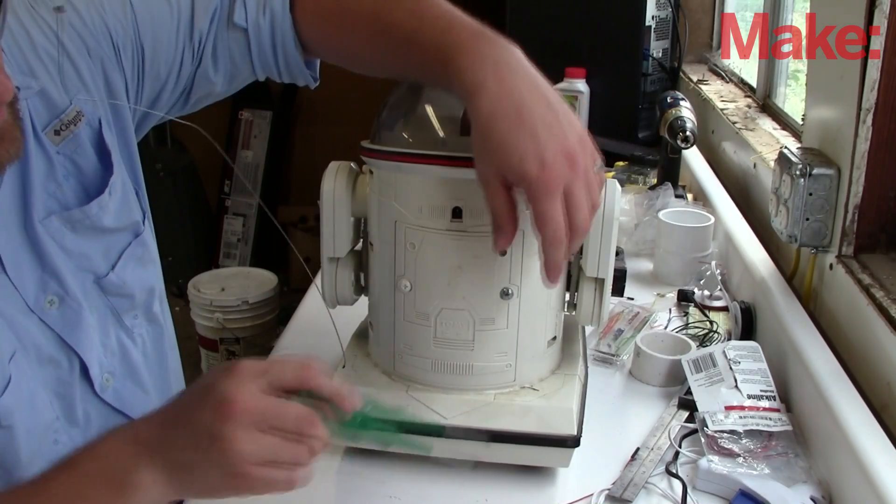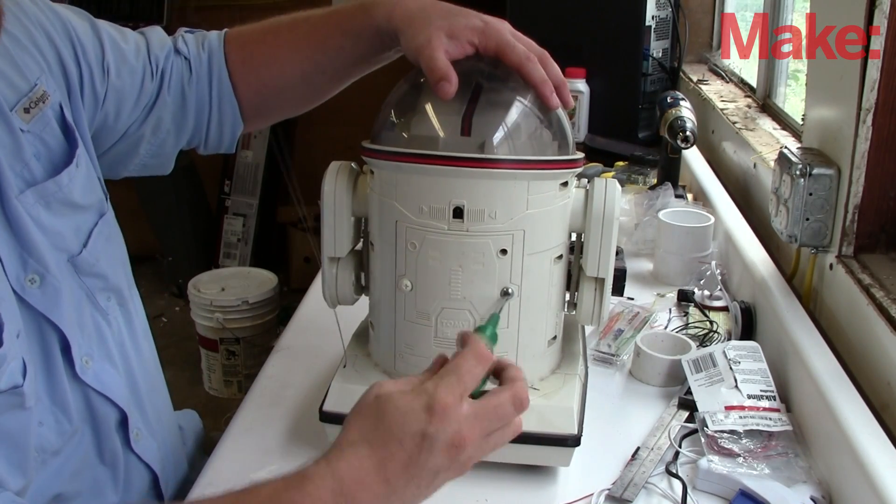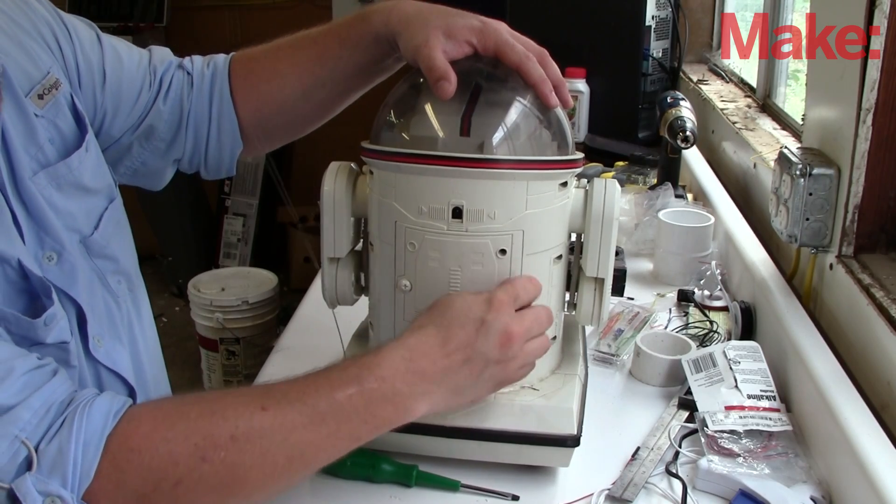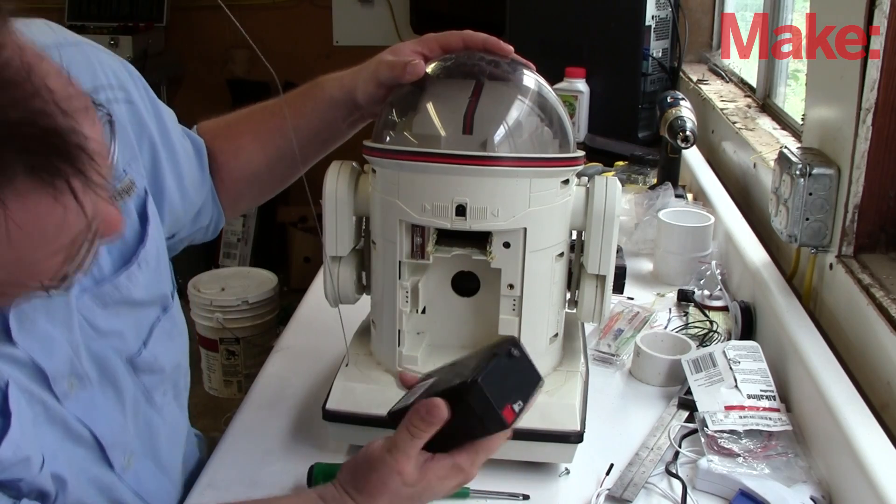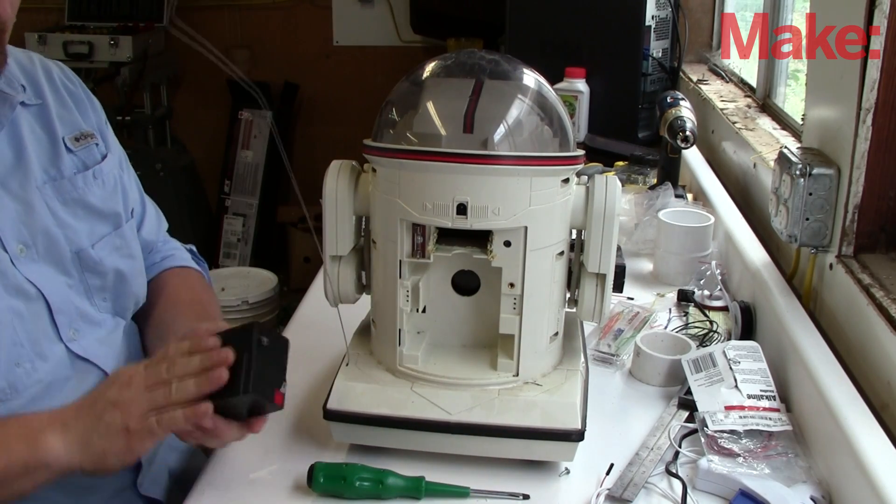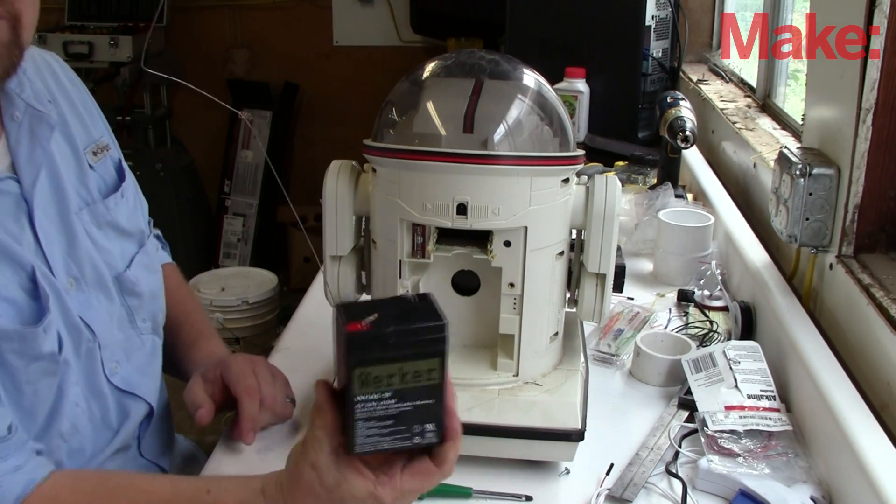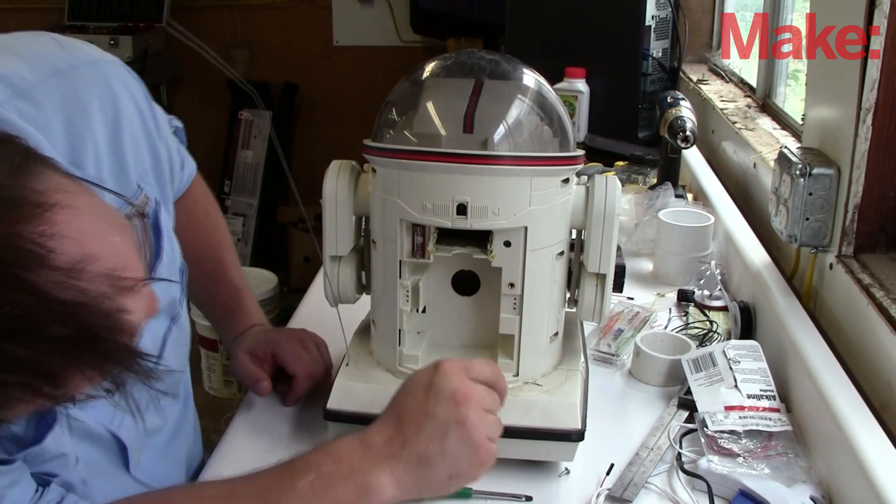The first thing I do in approaching a project of this type is to dig into the machine and see what parts I have to work with. What can I use? What can't I use? So I find all the screws and take them out of the way, and all the other parts pull them out one by one. For instance, this is a 6-volt battery. We'll come back to that a little later.